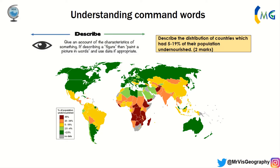When you 'describe,' you're usually looking at about two marks. Describe is to give an account of the characteristics of something — to tell the examiner what you see. For example, describe the distribution of countries which have 5 to 19% of their population undernourished. That 5 to 19% on the key is shown in yellow, so you look at the countries that have an undernourished population and describe how they're spread.